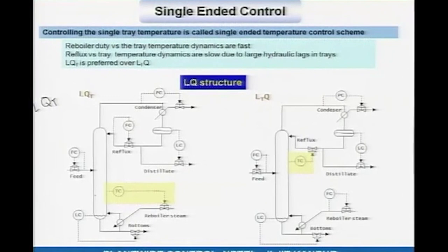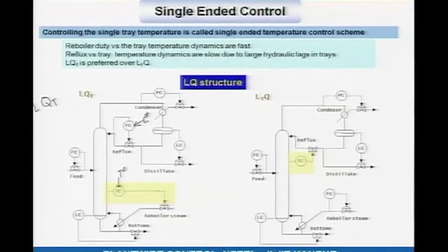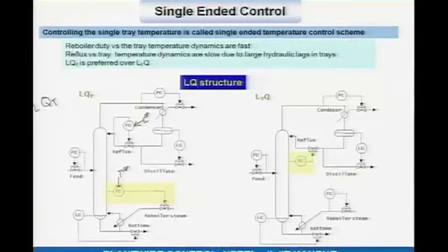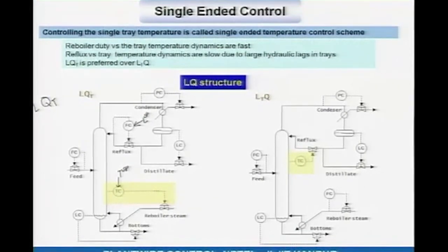The control structure has the operator setting L and the operator setting the temperature setpoint of the tray being controlled. Which tray temperature to control is another very important issue — we will address that shortly. Based on this tray temperature measurement, the reboiler duty is adjusted. If the temperature is increasing — meaning heavies are accumulating — you reduce the reboiler duty so the temperature goes down. If the temperature is decreasing — meaning light stuff is coming down — you increase the reboiler duty to send the lights back up. This is LQT.